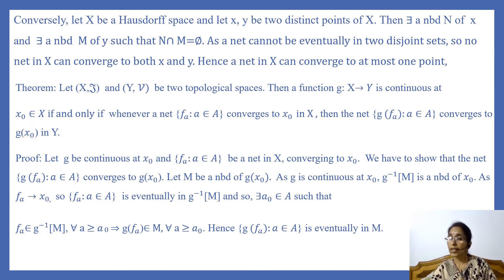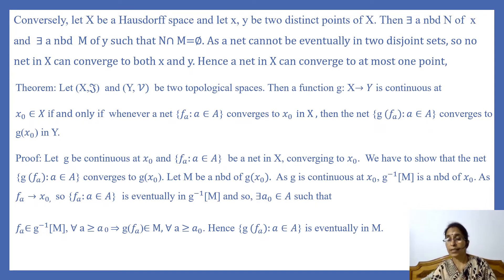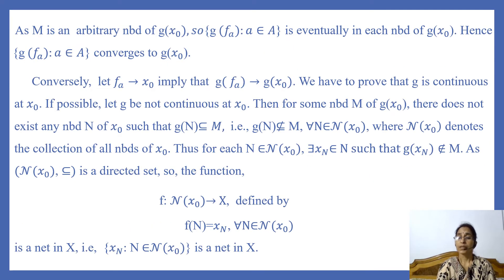Since G is continuous at x₀, we know that G⁻¹(M) is a neighborhood of x₀. As the net F_A converges to x₀, F_A is eventually in each neighborhood of x₀. Since G⁻¹(M) is a neighborhood of x₀, the net F_A is eventually in G⁻¹(M). So there exists some A₀ ∈ A such that F_A ∈ G⁻¹(M) for every A ≥ A₀. This implies G(F_A) ∈ M for every A ≥ A₀. Hence the net G(F_A) (A ∈ A) is eventually in M.